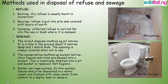Methods used in disposal of refuse and sewage — in order to keep our environment clean and free from disease-causing microorganisms. Methods used in disposal of refuse: 1. Burning — dry refuse is usually burned in an incinerator. 2. Burying — refuse is put into pits and covered with layers of earth. 3. Dumping — collecting refuse and carrying it far into the sea or bush where it is dumped; usually a site is chosen for this.